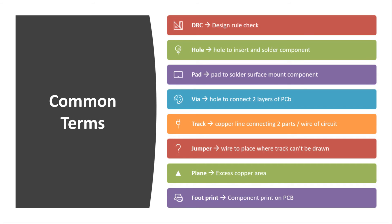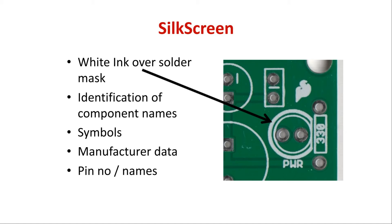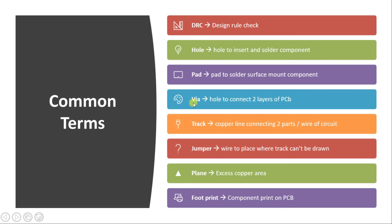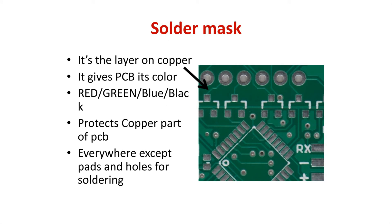Some of the most common PCB terms you must know before studying PCB design are: DRC, or Design Rule Check — most software uses this to check the PCB design for errors. Then there are holes, which are through-holes where components are inserted. There is also a pad — if you are using an SMD type of PCB, the pad is the flat metal area for surface-mount components. Then there is VIA, which is a point that connects the top layer and the bottom layer of the PCB — it is a small hole used specifically for that inter-layer connection.